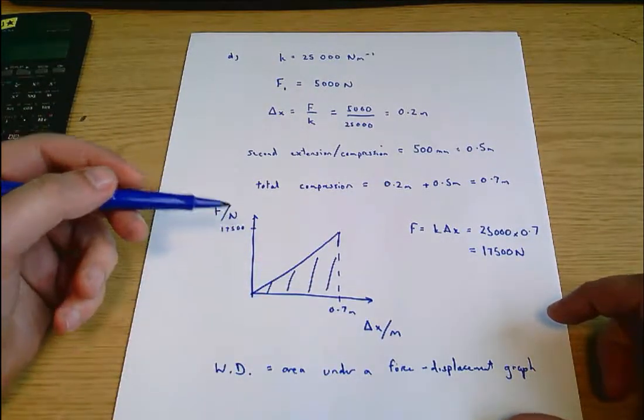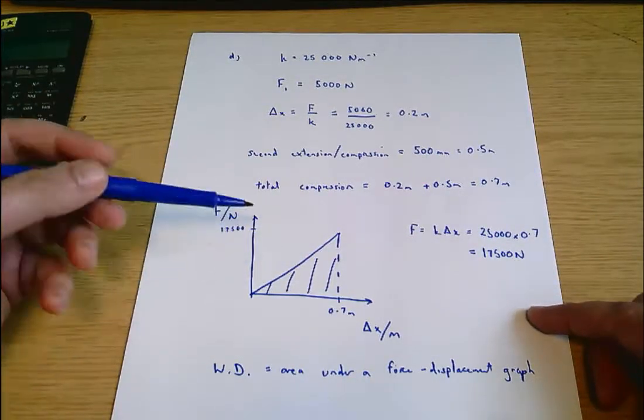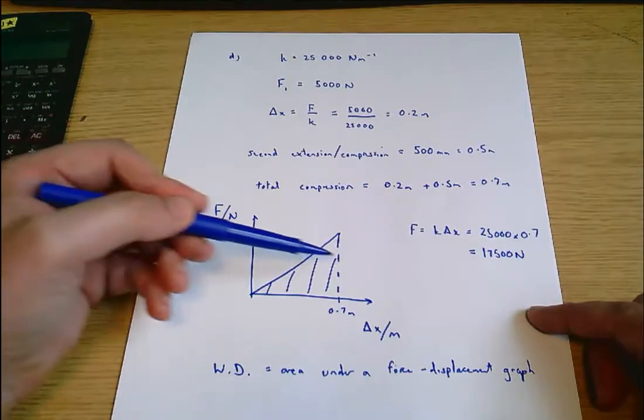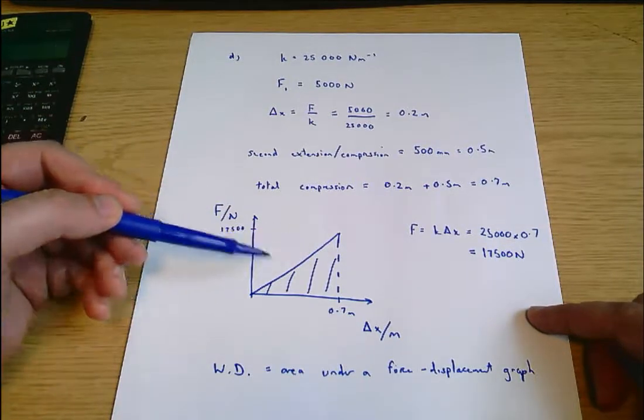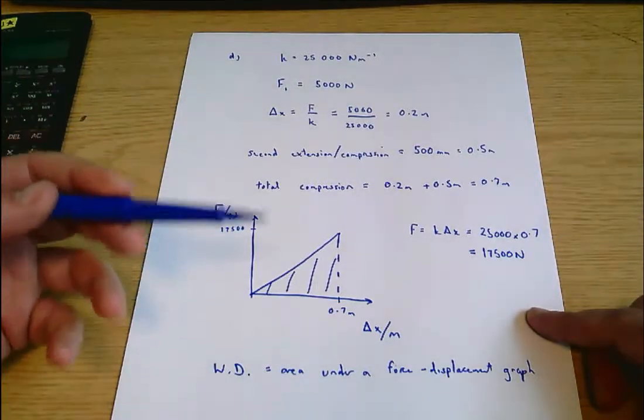If in many cases you have a constant force, then this graph would be a rectangle because it would have a flat top. The force doesn't vary. And in that case, work done would just be force times distance. And that's a formula you're used to.